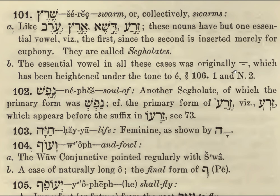The essential vowel in all these cases was originally patah, but what's happened is that the vowel increased to E. Nefesh — soul of. This is another one of these. The primary form was Nafesh. And the primary form of Zerang appears before the suffix when we put a suffix on the end: Zerango. You don't need to pay too much attention to this etymological information unless you plan to be writing Biblical Hebrew.